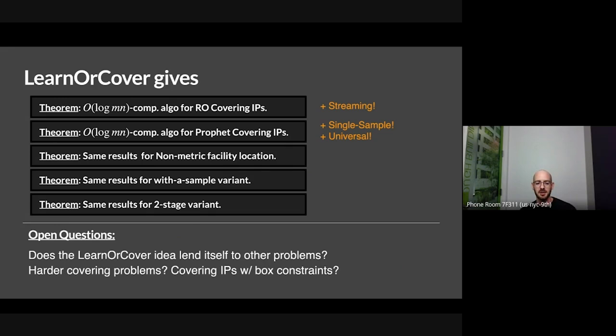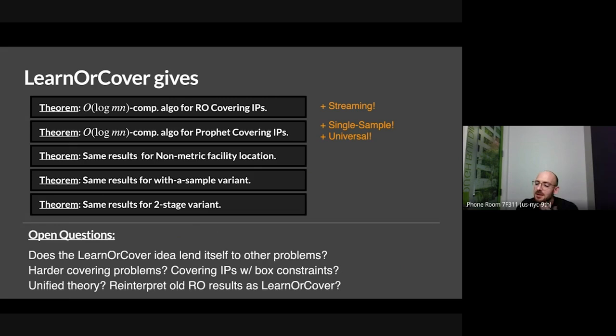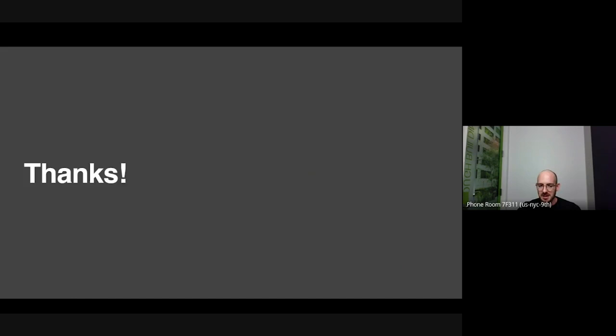I don't know how to answer the question for covering IPs with box constraints, also known as multiplicity constraints. Standard tricks for dealing with box constraints break in random order for important reasons. If anyone can figure out a unified theory of what we've done here, one thing I want to know is whether we can reinterpret old random order results in this Learn-or-Cover framework. Thanks for your time — I'll answer your questions, and I'm around Google New York for a couple of weeks if anyone's interested in chatting.